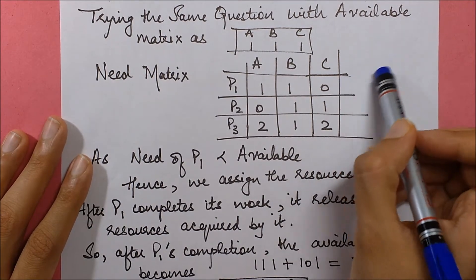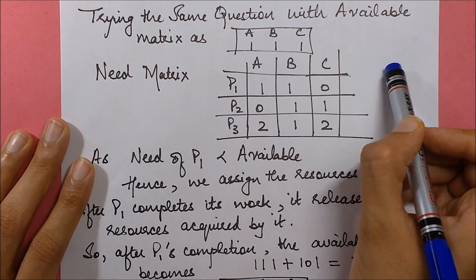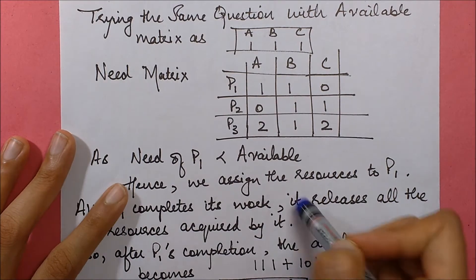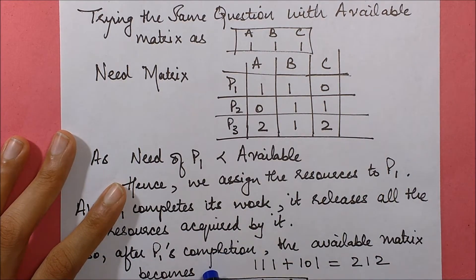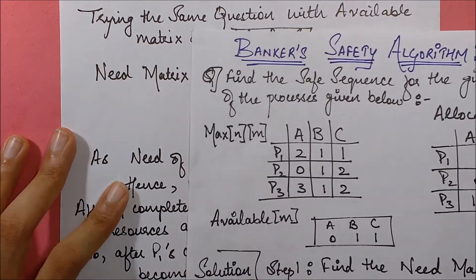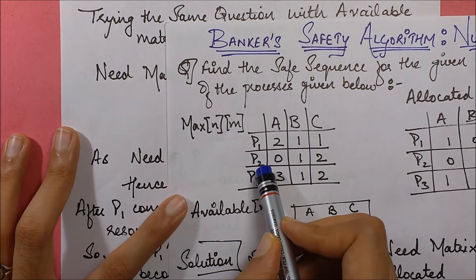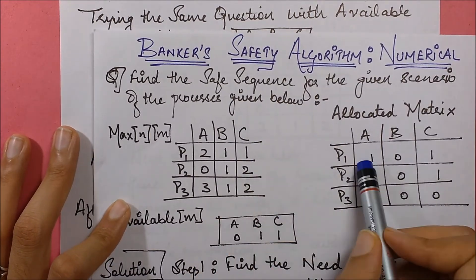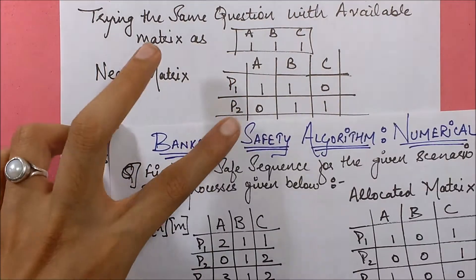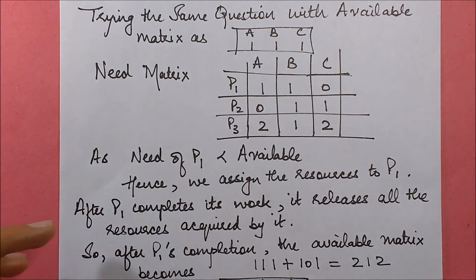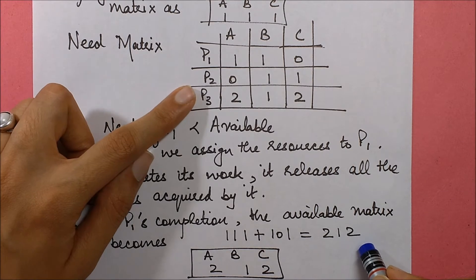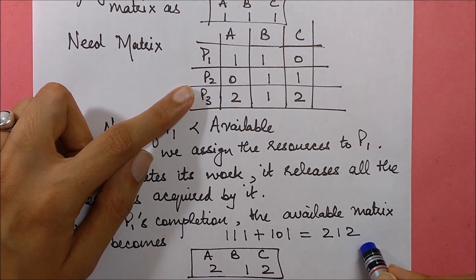This time we can start with P1, because P1's need is less than or equal to the available [1, 1, 1]. Once P1 completes, it releases all the resources allocated to it. The allocated ones for P1 were [1, 0, 1], so after adding those to the available we get [2, 1, 2]. Now we can assign resources to either P2 or P3.